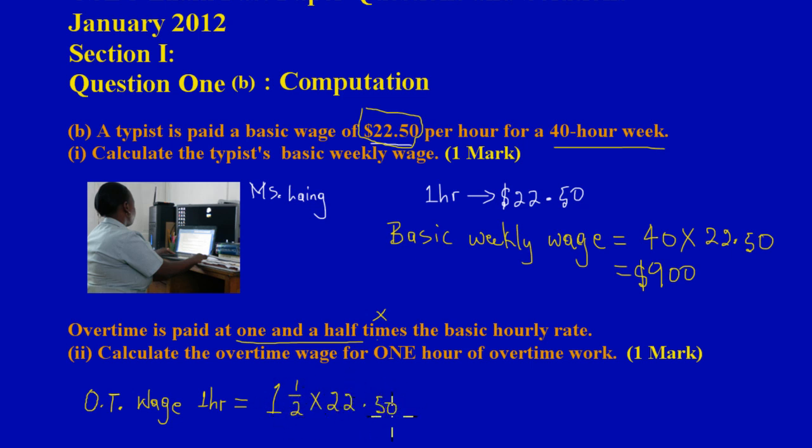We know one and a half can be converted to an improper fraction by saying 2 plus 1 gives me 3, so I'll have 3/2 times $22.50. This equals $33.75. You can always type it in your calculator: 3 divided by 2 times 22.50, and you will get $33.75. That's our answer.